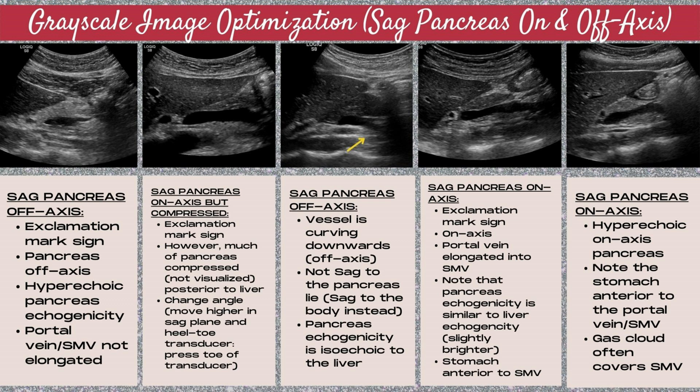Note that the hepatic artery is present, and you can also see a nicely elongated portal vein traveling into the SMV. But the key here is — yes, you want to get the vessels elongated, but you also want to ensure that you're showing as much pancreatic tissue as possible. In this case, coming higher up in the body and then heel-toeing that sagittal transducer would give a better window where this pancreatic tissue is not compressed. In the middle image, the sagittal pancreas is off-axis — you can see that the portal vein and SMV are starting to curve downwards, which means you're not sagittal to the lie of the pancreas itself, but rather more sagittal to the body.